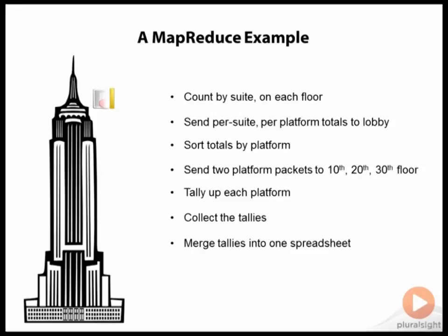We can do things pretty quickly this way, because in the map step we have 102 people — one on each floor — all doing the counts at the same time. And because they're all doing the same thing, we can write a single program and tell each of our counters to go ahead and do that bit of work on their little bit of data. It's a nice way to divide and conquer, and it's something that is very big in the big data space, but it's also relevant to NoSQL in general, whether or not it's a big data scenario.